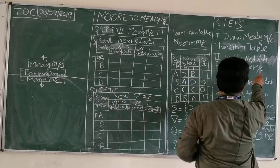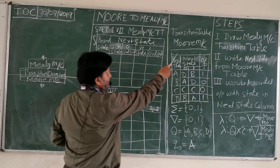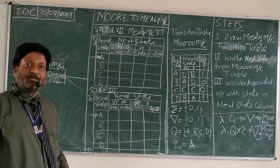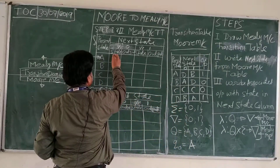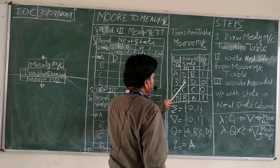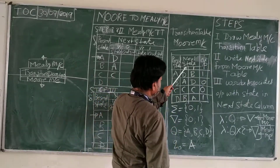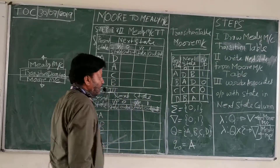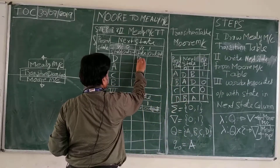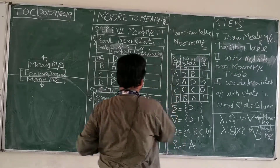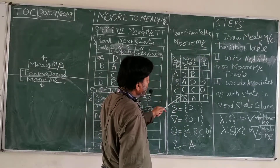Step 2 is to write the next state from the Moore machine table. From the Moore machine transition table: if you put 0 on A, you reach D; if you put 0 on B, you reach A; if you put 0 on C, you reach C; if you put 0 on D, you reach D. For input 1: if you put 1 on A, you reach D; if you put 1 on B, you reach D; if you put 1 on C, you reach C; if you put 1 on D, you reach A.